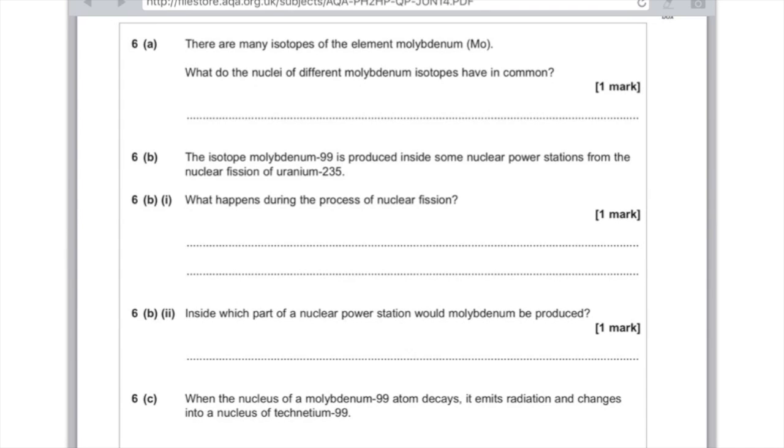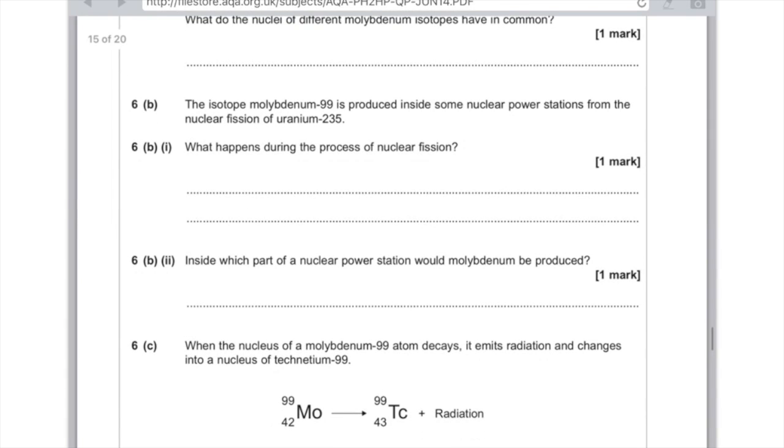6a, there are many isotopes of the element molybdenum MO. What do the nuclei of different molybdenum isotopes have in common? Remember your definition of an isotope here is atoms of the same element with the same number of protons but different number of neutrons, so clearly what they have in common here is they have the same number of protons. 6b, the isotope molybdenum-99 is produced inside some nuclear power stations from the nuclear fission of uranium-235. What happens during the process of nuclear fission? Effectively that's asking for the definition of nuclear fission, so you want to say that atomic nuclei are split. Part 2, inside which part of the nuclear power station would molybdenum be produced? And the crucial thing here is to mention the nuclear reactor.